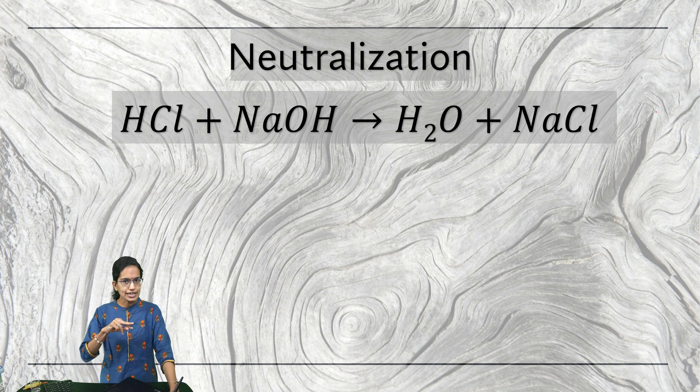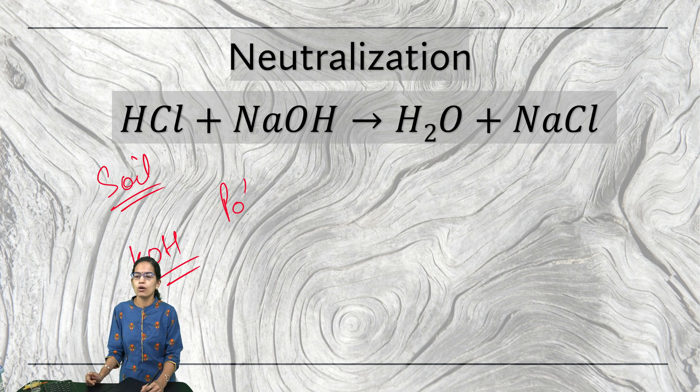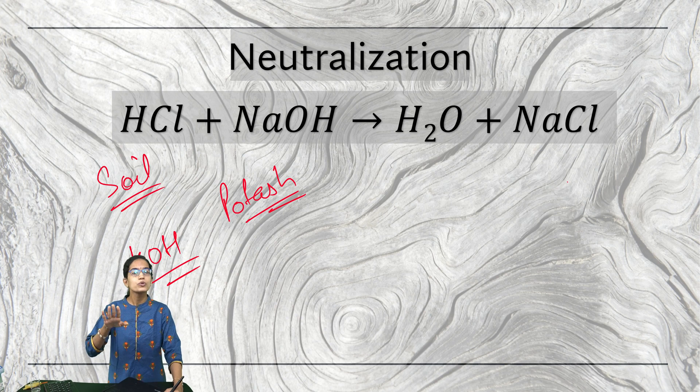Two common examples of indigestion and insect bite we talked about. The next common example is soil. The soil structure sometimes can be too acidic. What is used is potassium hydroxide. We call this commonly as potash. Potash is used in order to neutralize the soil if the soil is too acidic.